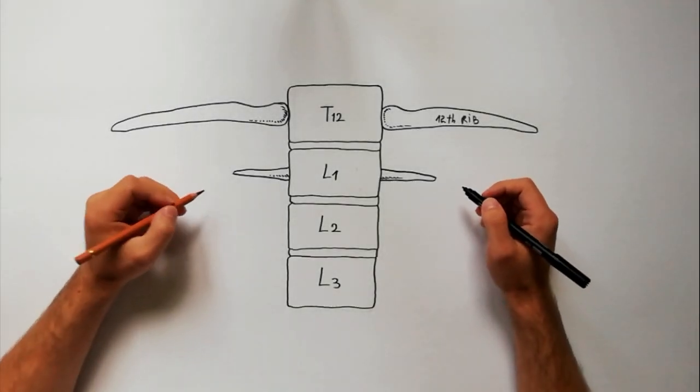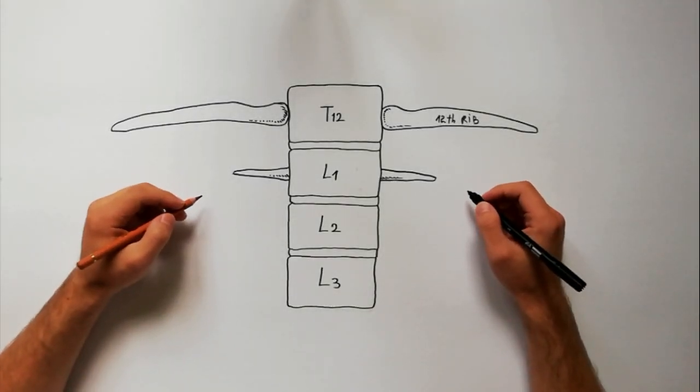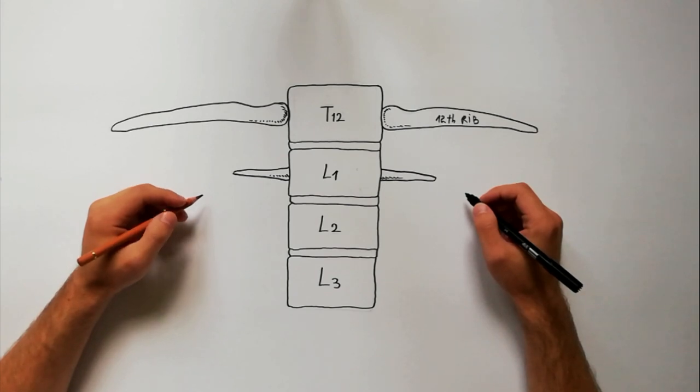The muscular fibers of the lumbar part of the diaphragm originate from the upper three lumbar vertebrae by way of right and left crura and the five archoid ligaments.